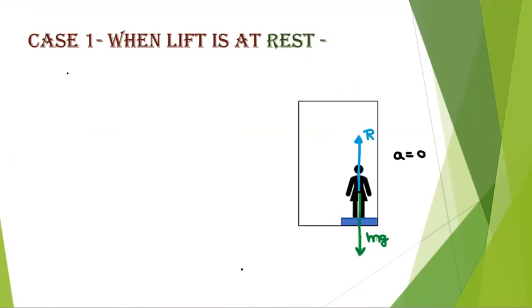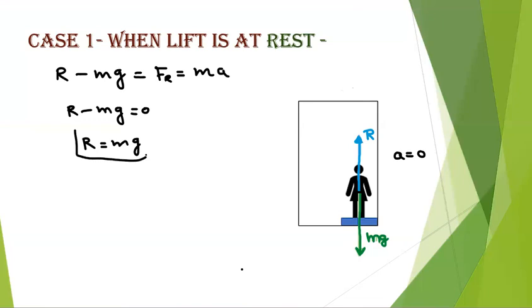In this case, as two forces are acting on the person oppositely, both are vector quantities. You will represent it as R minus Mg, opposite direction, equals resulting force FR, which will be MA. As body is at rest, acceleration is zero. So R minus Mg will be zero. And apparent weight of body in the case where lift is at rest will be equal to its own weight. R equals Mg.